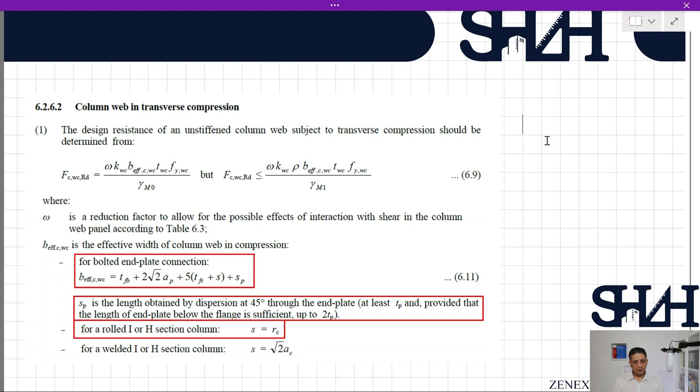Omega is the reduction factor we are familiar with from Table 6.3. beff,c,wc is the effective width of column web in compression. For bolted end plate connections, beff,c,wc will be calculated according to the given equation 6.11. sp is the length obtained by dispersion at 45 degrees through the end plate, at least tp, provided that the length of end plate below the flange is sufficient, up to 2×tp. The conservative value for sp is taken as tp without that dispersion.